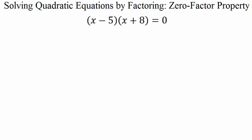For the following examples, we're going to talk about solving them by factoring. Either we're going to be given a polynomial that will need to be factored, or every once in a while we may be given an example that is already in factored form. This example here has already been factored — we have our two factors set equal to zero. For an example like this, we need to know the zero factor property.